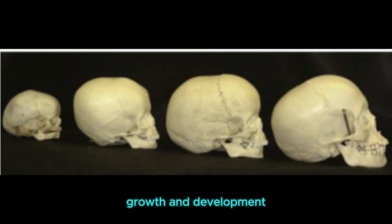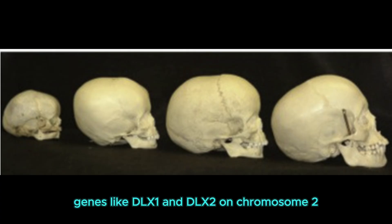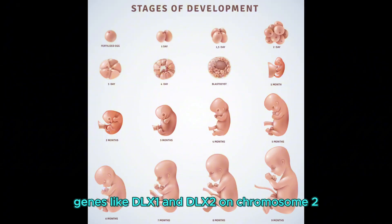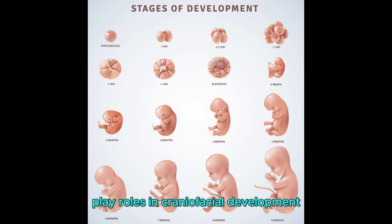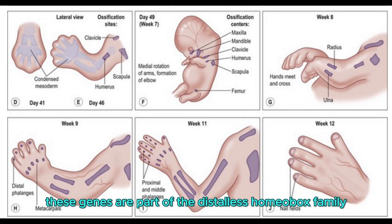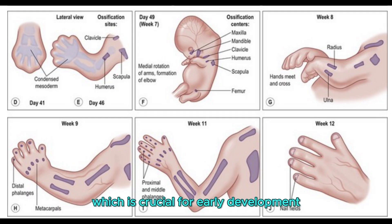Growth and development: Genes like DLX1 and DLX2 on chromosome 2 play roles in craniofacial development and limb formation. These genes are part of the distal-less homeobox family, which is crucial for early development.